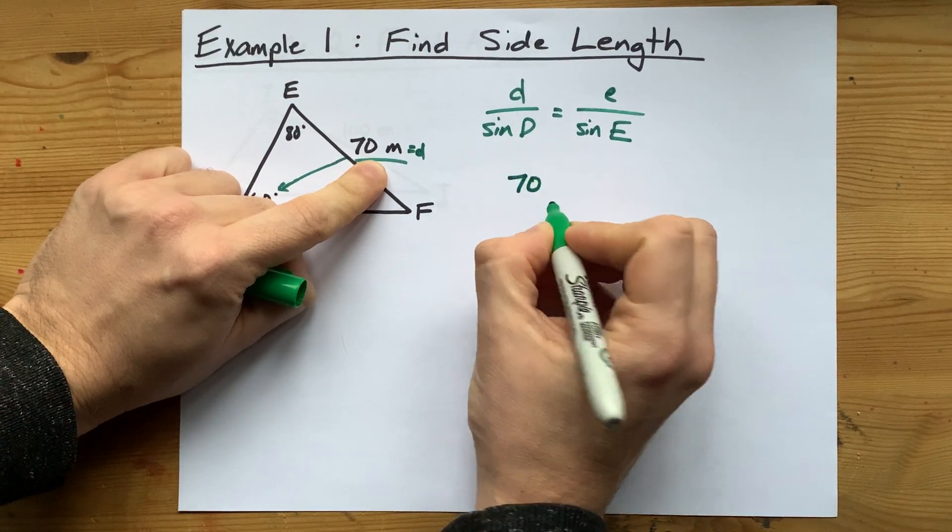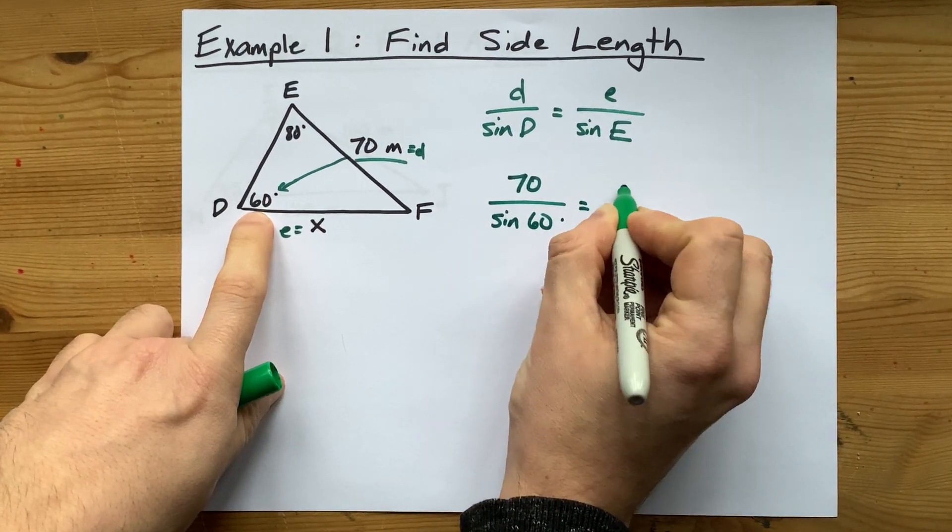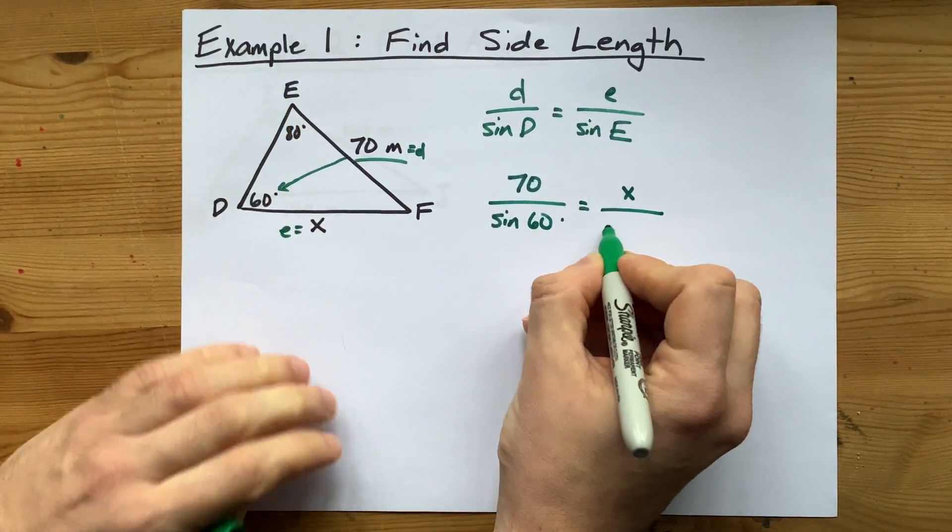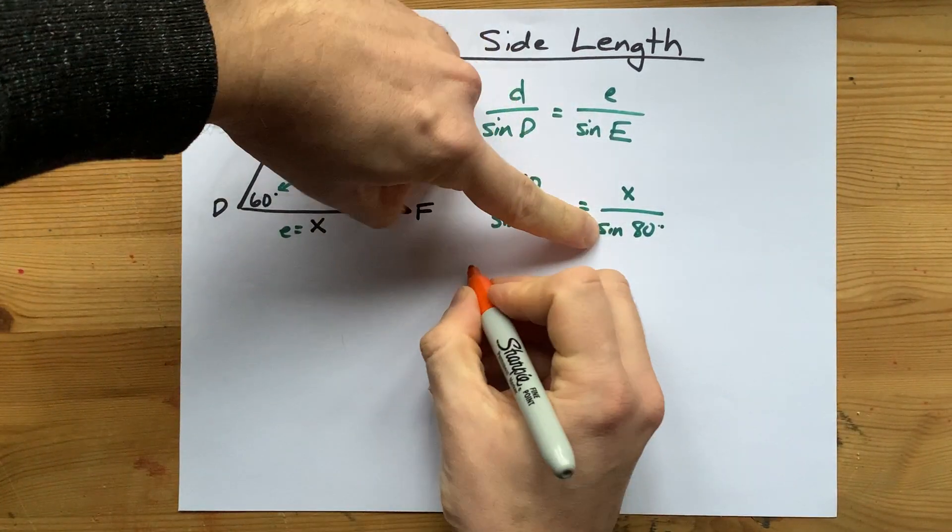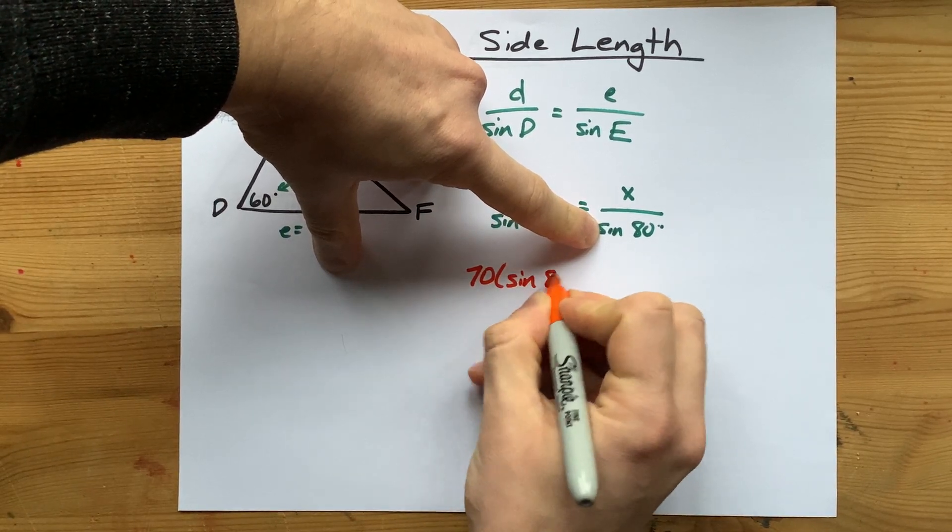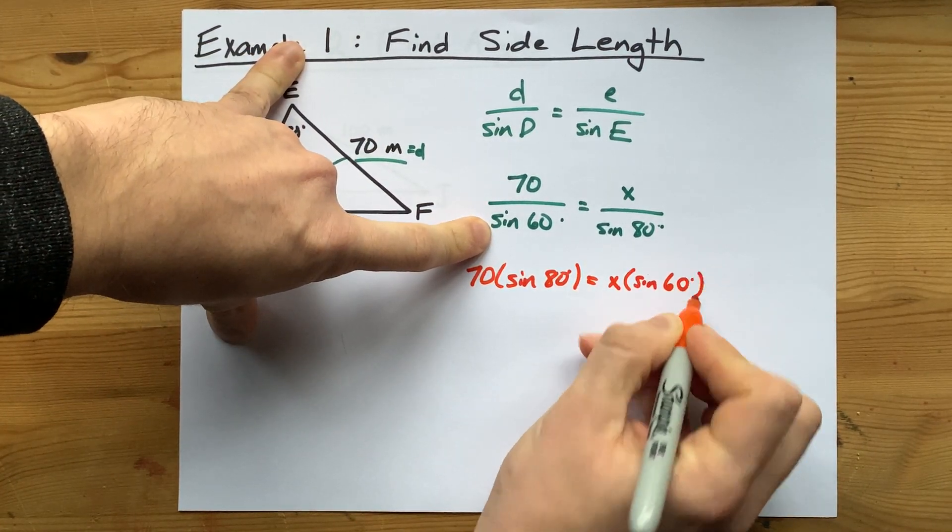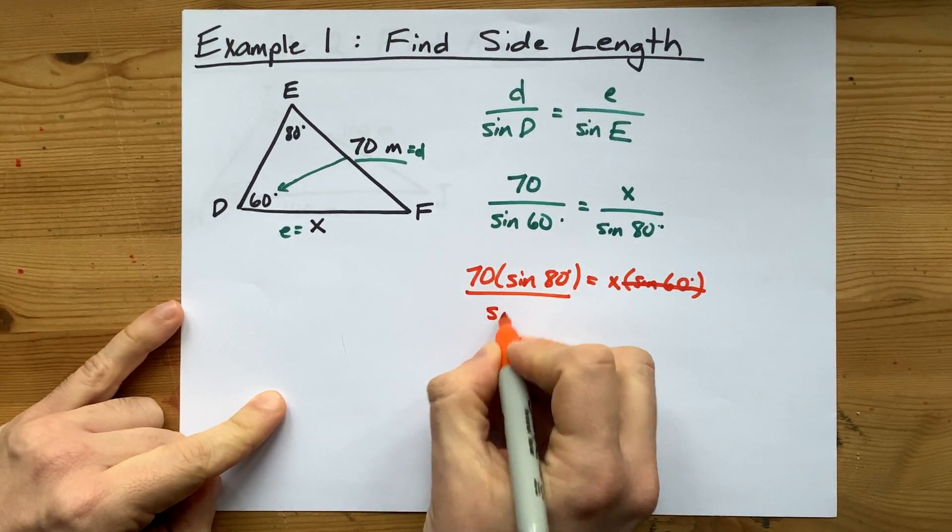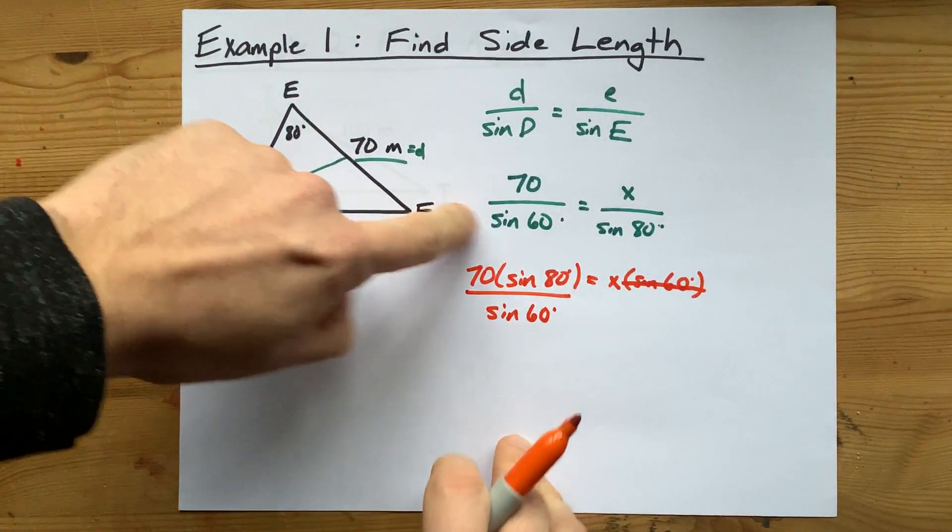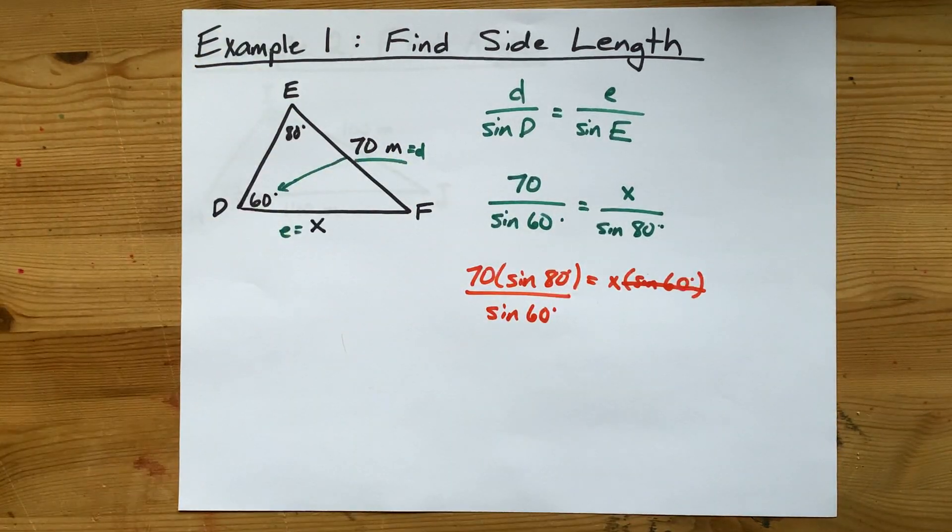Now I'm going to plug my numbers in. Little d is 70 meters. Capital D is 60 degrees. Little e is what I don't know and capital E is 80 degrees. Now the way you can solve this is with cross multiplication. The top of one times the bottom of the other equals the top of the other times the bottom of the first one, and then you can undo this multiplication by dividing on the other side. Now you may note that you could also just undo this dividing by sin 80 by multiplying the other side by sin 80 and you end up with the exact same thing.